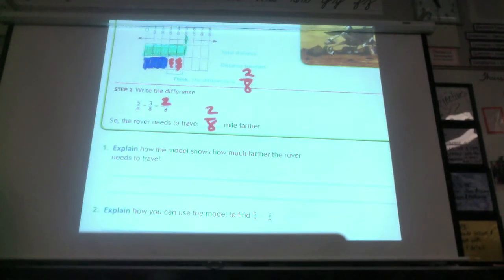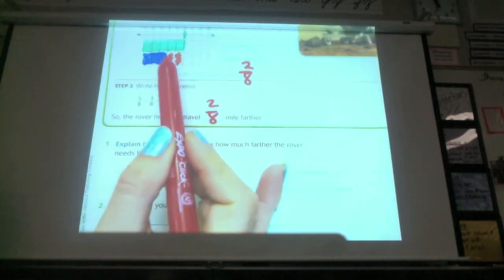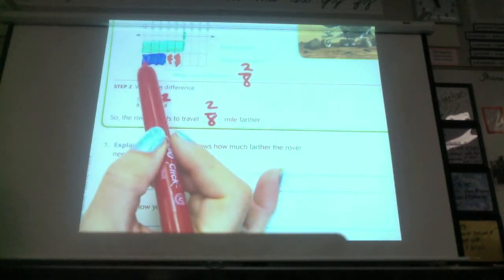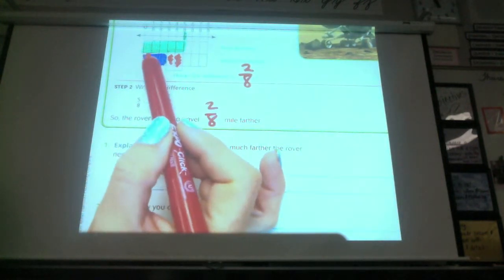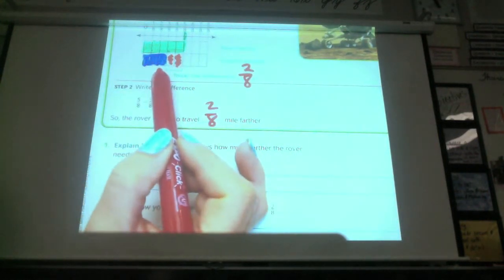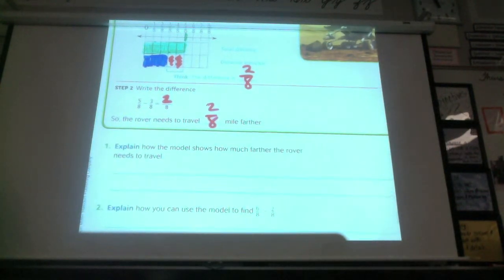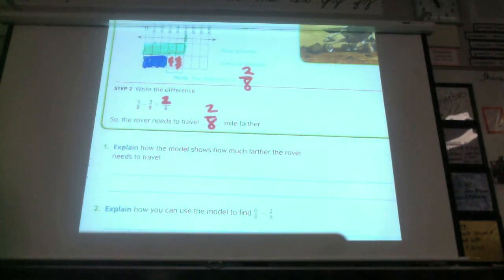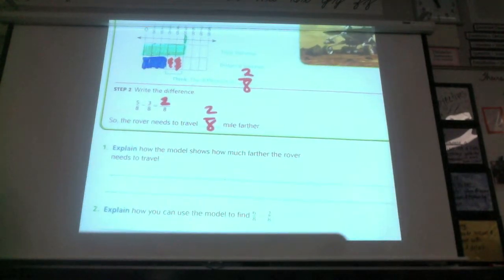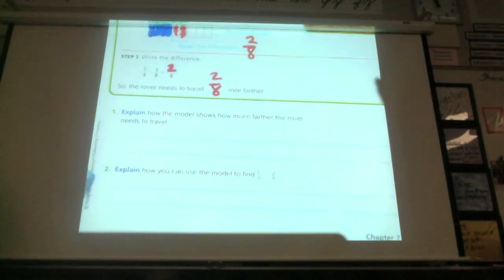There's only two spaces left. Okay, that works because there are only two spaces left from how much he needed, how much the rover needs to move, and how much it's already moved. Okay, Harish, what did you say? Can you talk a little louder because I can't hear you. The model shows the rover needed to go two more spaces to reach five-eighths. All right, that works too. He said, the model shows us how the rover needed to go two more spaces to reach five-eighths. And that's great. It's a nice, complete sentence, too.